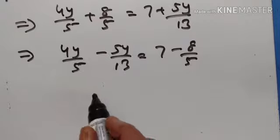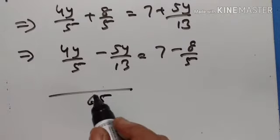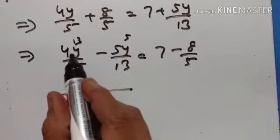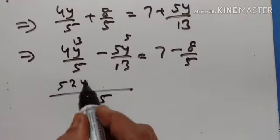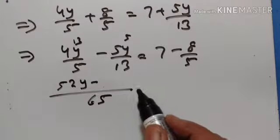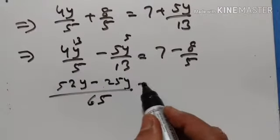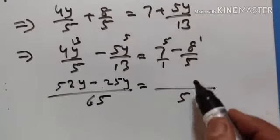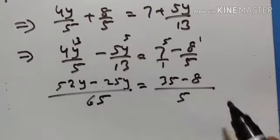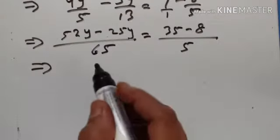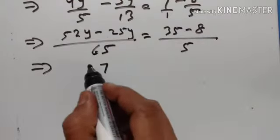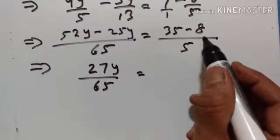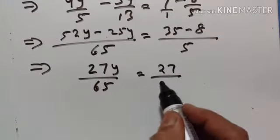The LCM of 5 and 13 is equal to 65. 13 into 4 is equal to 52, so we have 52y. 5 into 5 is 25, giving minus 25y. On the right side, LCM is 5; 1 into 7 is 35, minus 8. So 52y minus 25y equals 27y upon 65, and 35 minus 8 equals 27 upon 5.